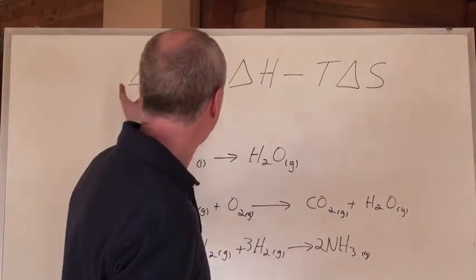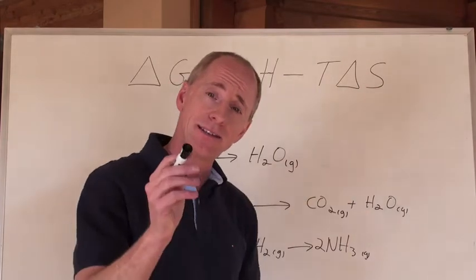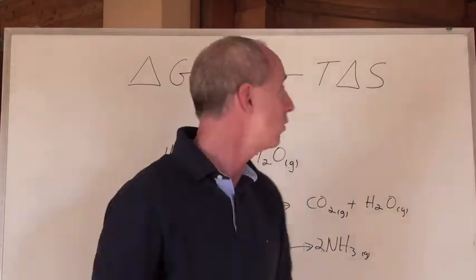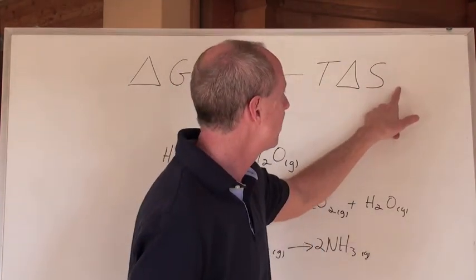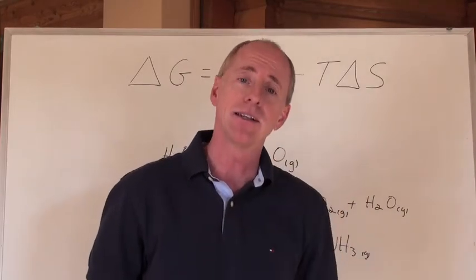So with this very powerful formula right here, where the delta G equals the delta H minus T delta S, and that delta S stands for the system. Whenever you don't see what this says down here, because there's no subscript, it actually means system. That's the delta S system.